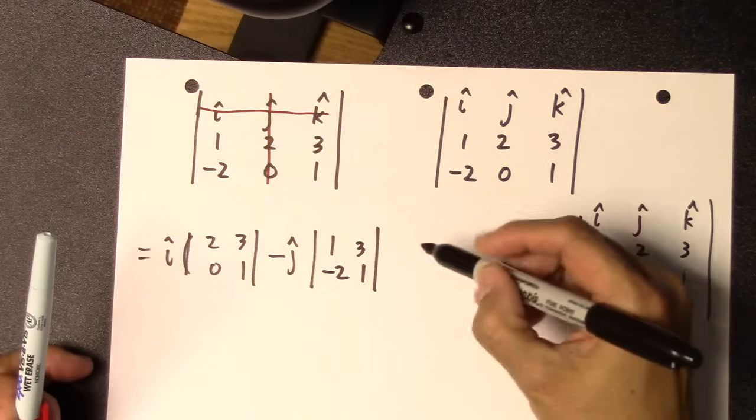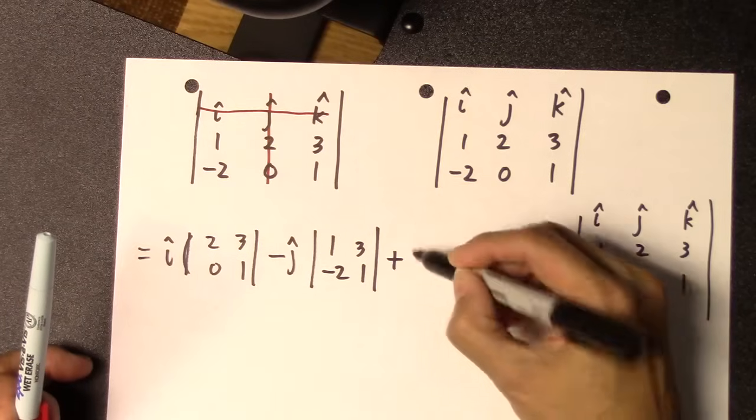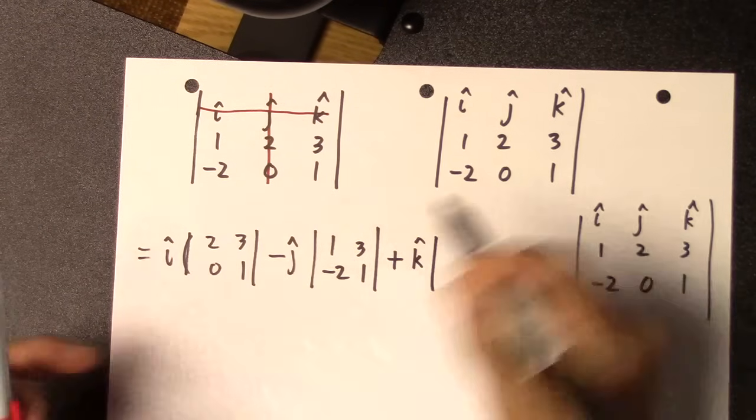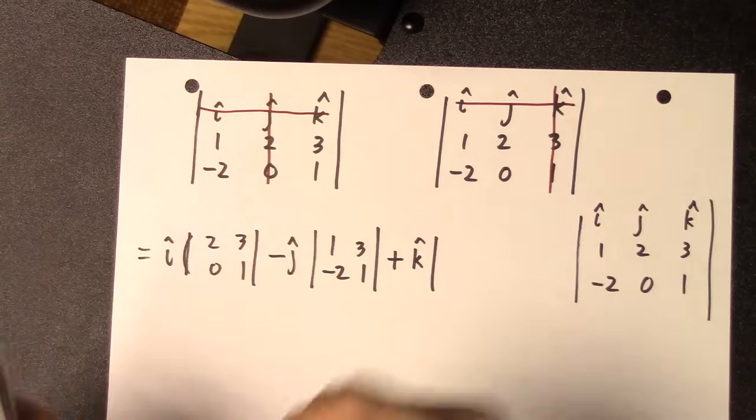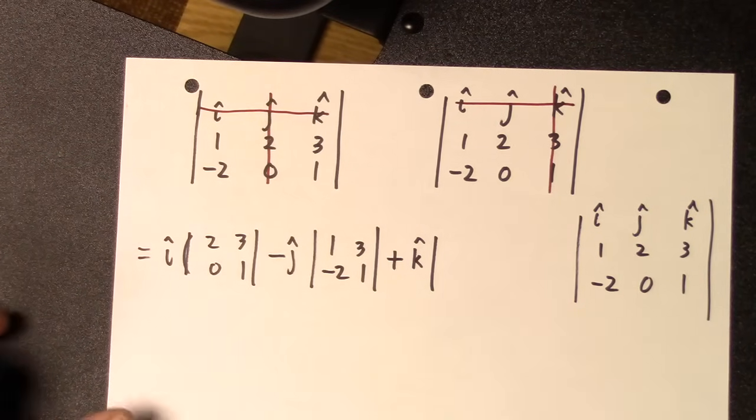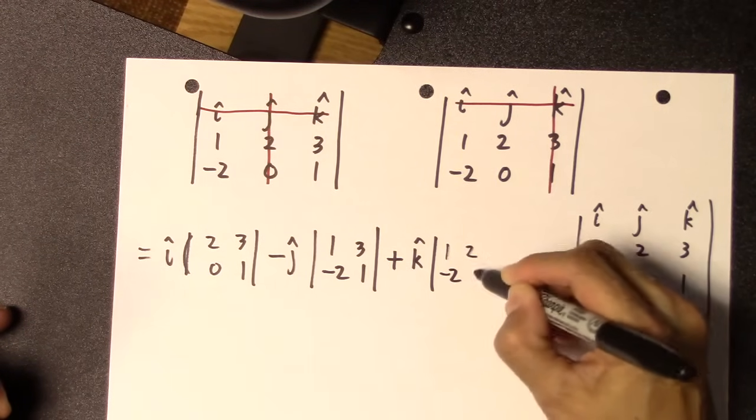And then you have to do the same thing for k hat. Now you must make that a plus k hat. Cross out the box and row containing the k hat. Oh, sorry, cross out the column and row containing the k hat, leaving you a box that is 1, 2, minus 2, 0.